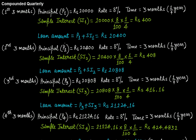When the interest rate is compounded quarterly, after every three months you calculate the interest and add it to the principal. For the first three-month period: principal is rupees 20,000, rate is 8%, and time is three months (one-quarter of a year). Simple interest = 20,000 × 8% × 1/4 = rupees 400. When you add this to the principal at the end of the first three-month period, you get a new principal — this is the first conversion period.